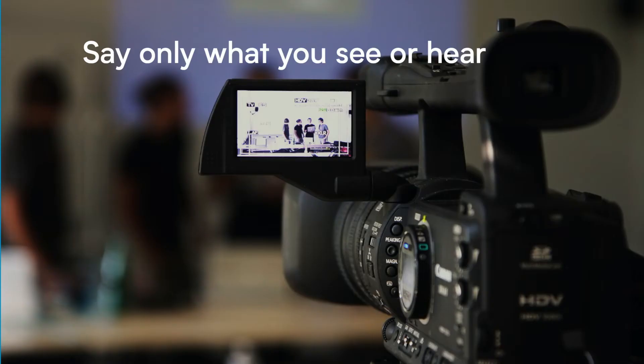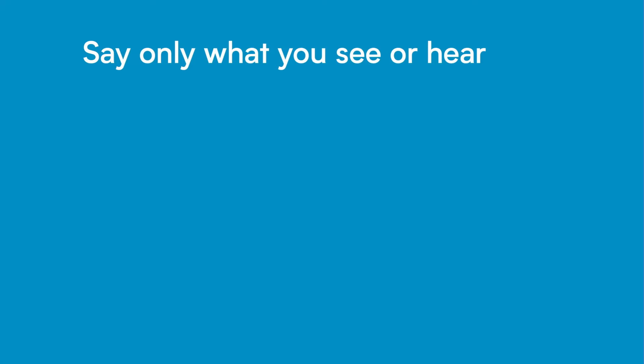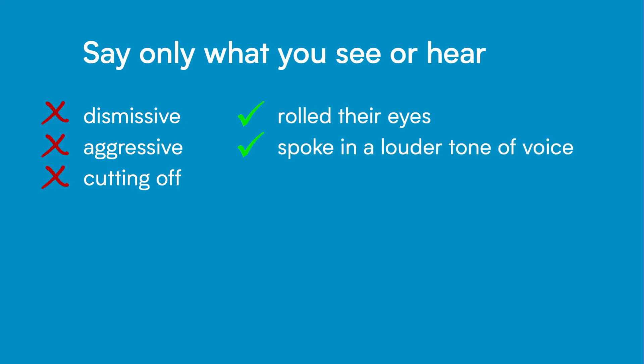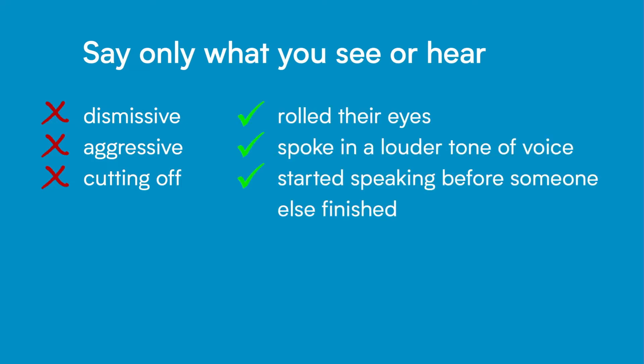It's as if you are viewing things through a video camera — mostly things that you can either see or hear, or direct quotes of what someone said. For example, instead of saying someone was dismissive, aggressive, or cut someone off, you could say they rolled their eyes, spoke in a louder tone of voice, or started speaking before someone else finished.